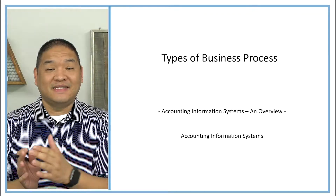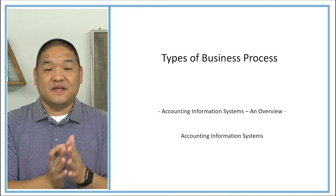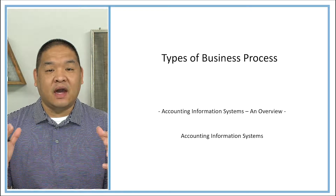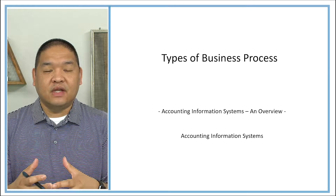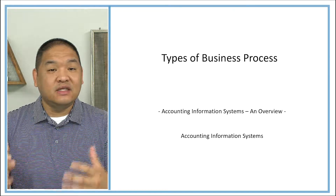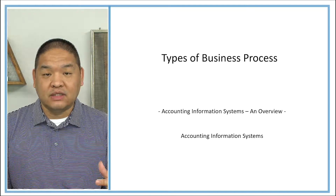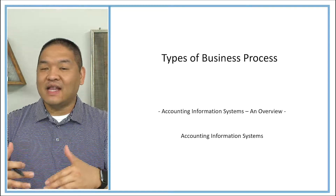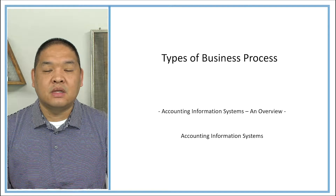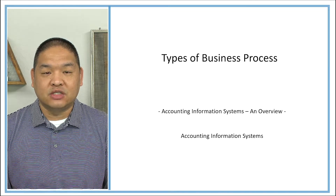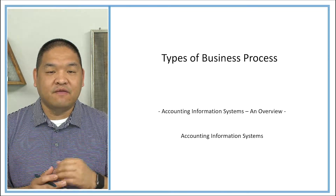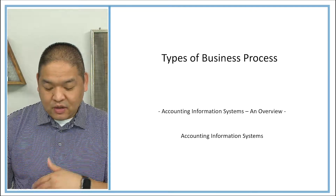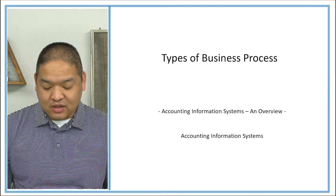In this lesson we are going to be talking about the different types of business processes that an organization may have. These are just some of the most common — different organizations might have more or less — but these are the most common when we look at an organization. These are also known as transaction processes or transaction cycles.